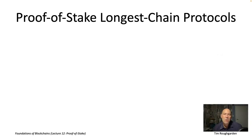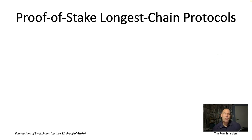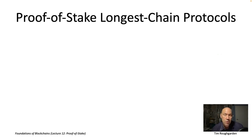In our treatment of permissionless consensus, we're focusing on the two most common approaches to Sybil resistance: proof of work and proof of stake, and the two most common families of consensus protocols: longest chain protocols and BFT-type protocols.